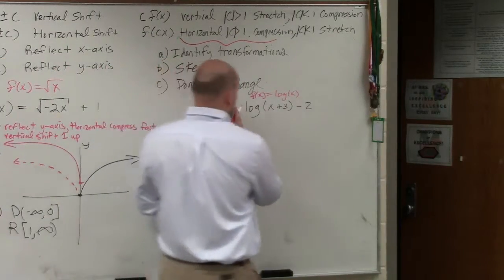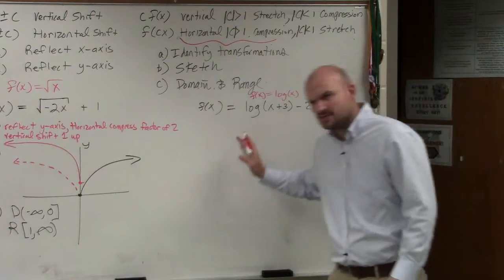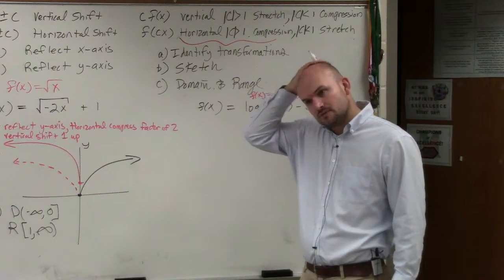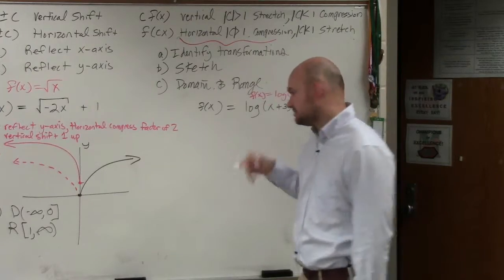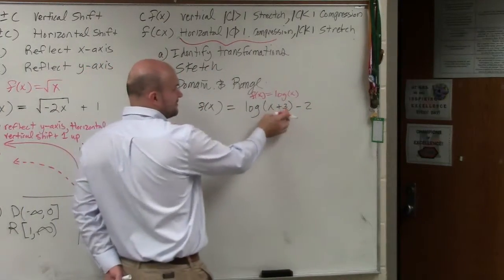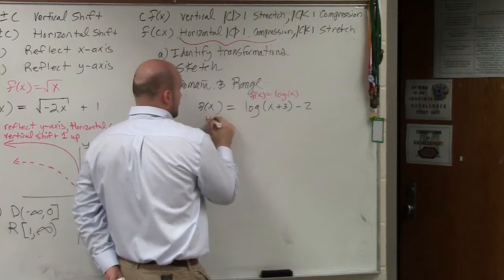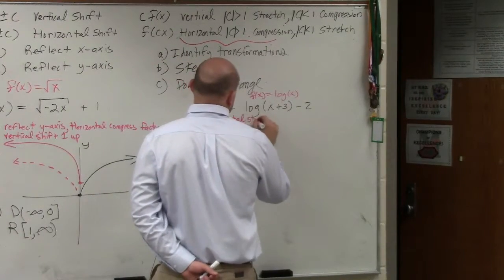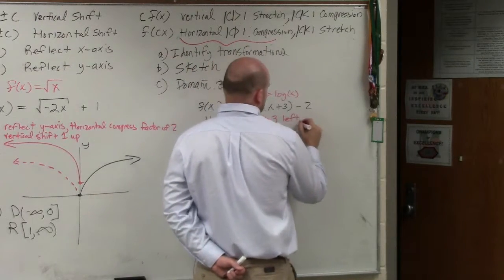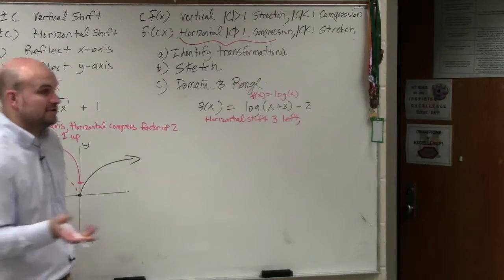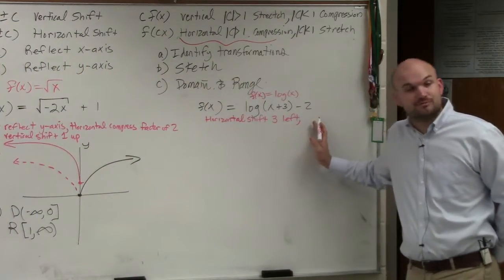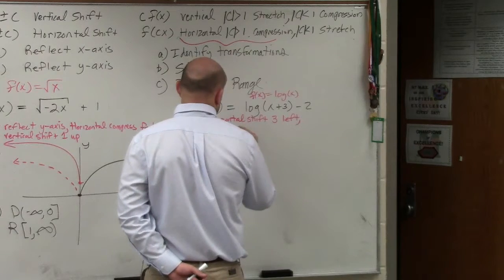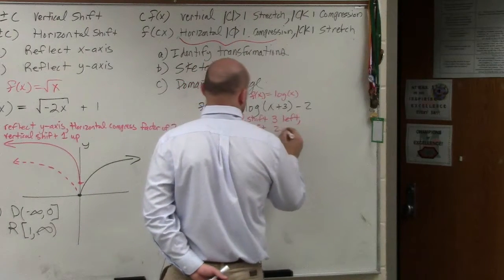We can see I'm not multiplying anything outside of it here. I am adding a 3 on the inside. So we have log of x plus 3. Adding 3 inside the parentheses is a horizontal shift 3 units left. Then the only other thing I'm doing is I'm subtracting a 2. But that 2, I'm not subtracting inside the parentheses. I'm subtracting outside the parentheses. So we can say that's a vertical shift 2 down.